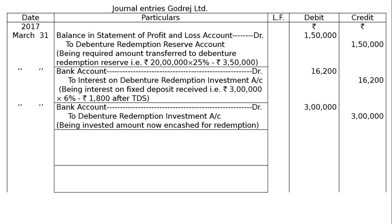Next entry: Bank account debited to debenture redemption investment account, Rs 3,00,000. Being the invested amount now encashed for redemption. The investment was Rs 3,00,000 — it was 15% of Rs 20,00,000 — which was earlier invested and is now encashed. We received interest at 10% less TDS.